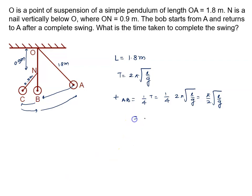So the total time taken from A to B and again from B to A is given by twice of this: 2 into π/2 root L by g, which means π root L by g. Where L I'll write as 1.8, gravity is 9.8 or 10, it depends on you, and you will calculate this time.